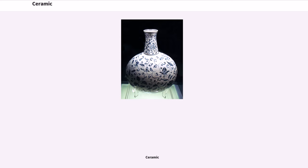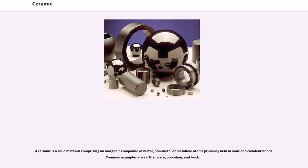A ceramic is a solid material comprising an inorganic compound of metal, non-metal or metalloid atoms primarily held in ionic and covalent bonds. Common examples are earthenware,